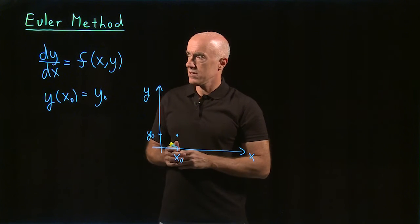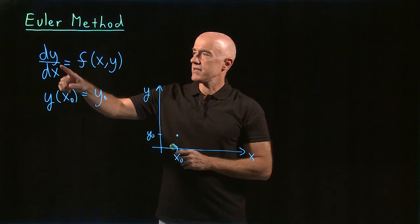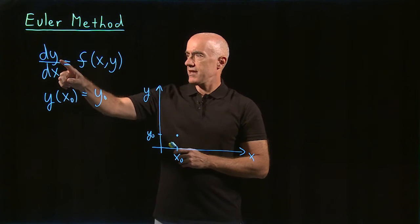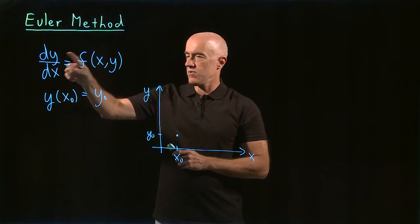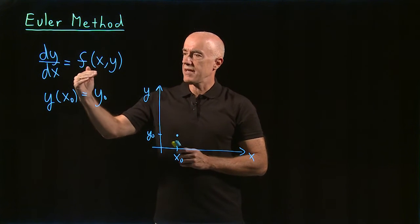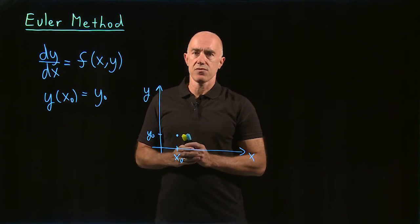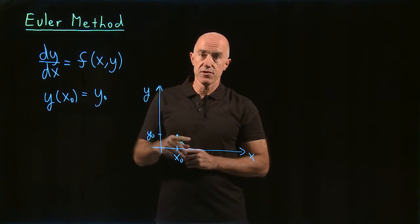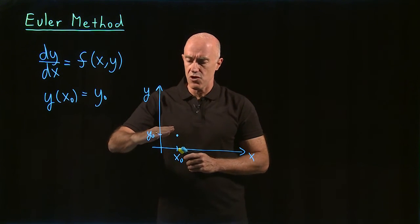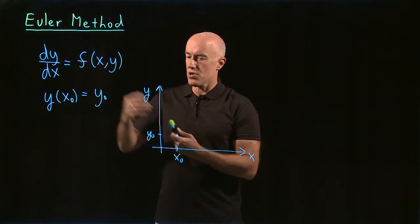Then what else do we know? Well we know the differential equation. So what does the differential equation give us? It gives us the value of dy/dx, the derivative of y at this point. So dy/dx is the slope of the tangent line to the curve y versus x. So it tells us the slope of the solution at that point.